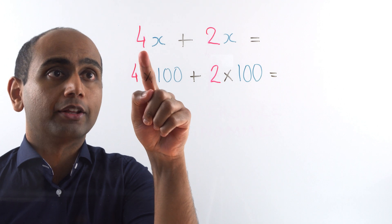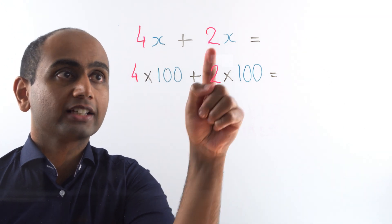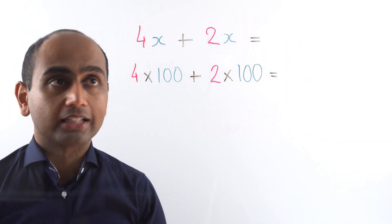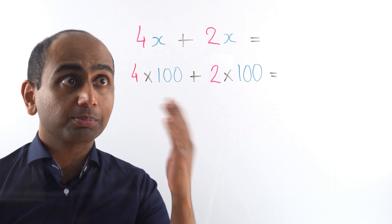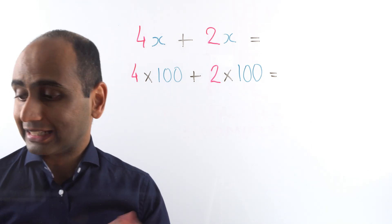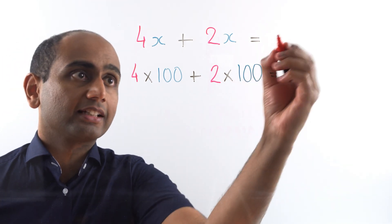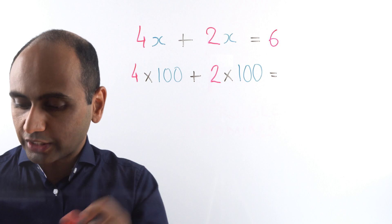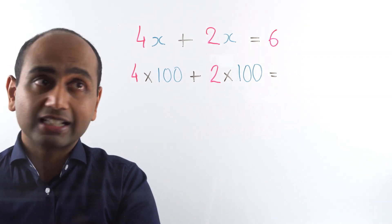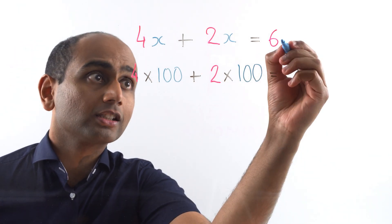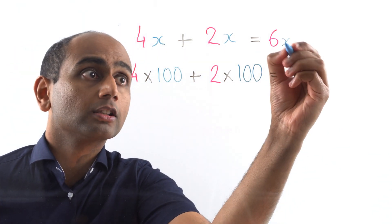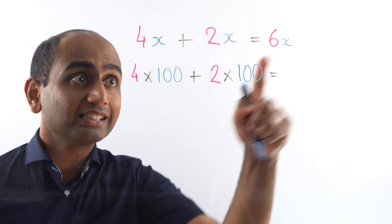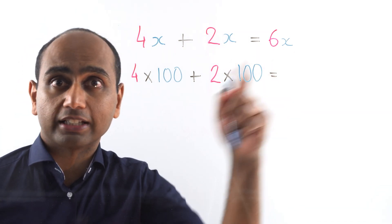Can we add together 4x and 2x? Well yes we can. 4x plus 2x is 6x, and the way I like to think of this is that if I have 4 lots of x plus 2 lots of x I get 6 lots of x.